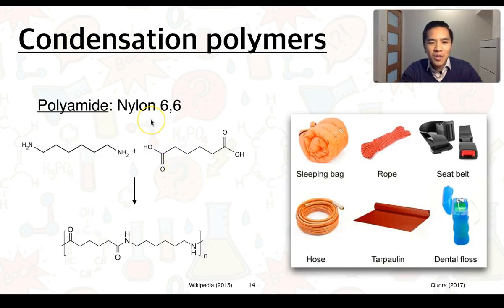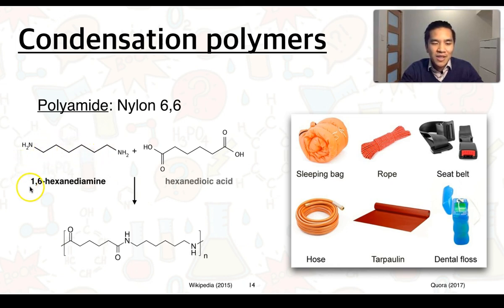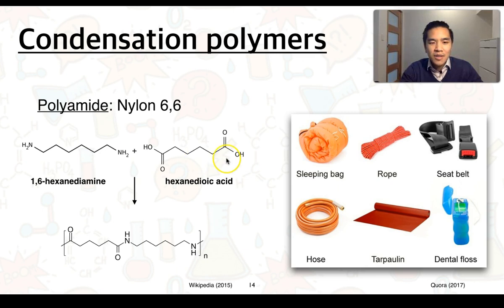For polyamides, we have nylon 6,6. The two monomers are 1,6-hexanediamine — a diamine with six carbon atoms — and hexanedioic acid, a dicarboxylic acid also with six carbon atoms. These react to produce the polymer with its repeating unit. Nylon 6,6 and other variations of nylon can be used to make a large range of products, including toothbrush bristles, parachutes, and stockings.